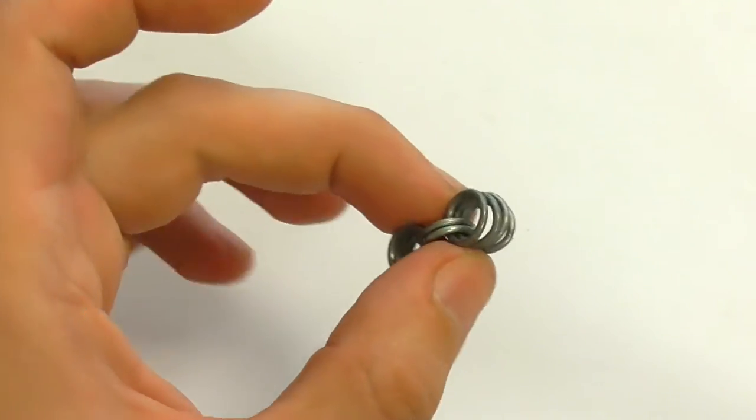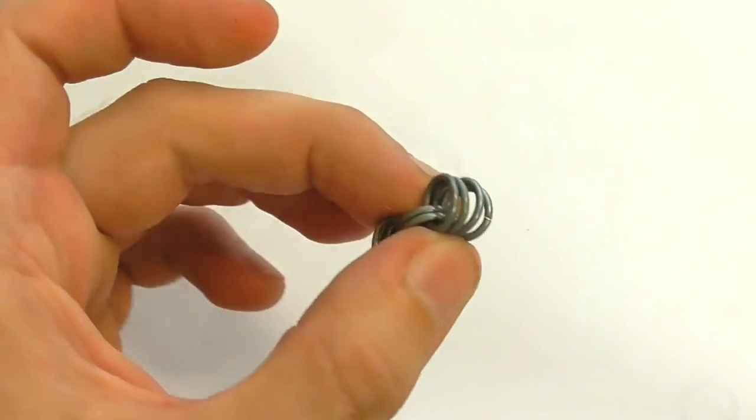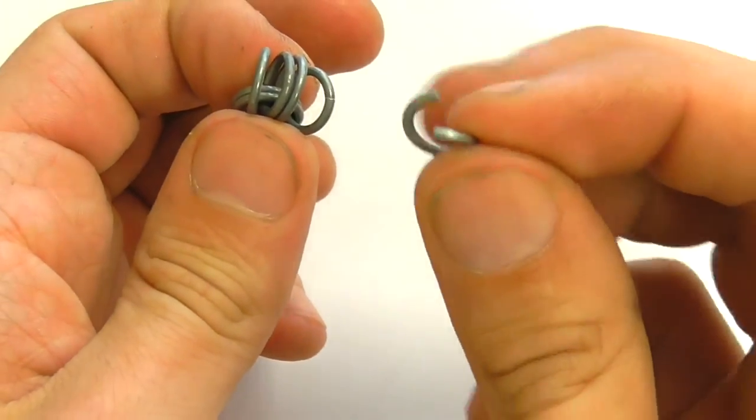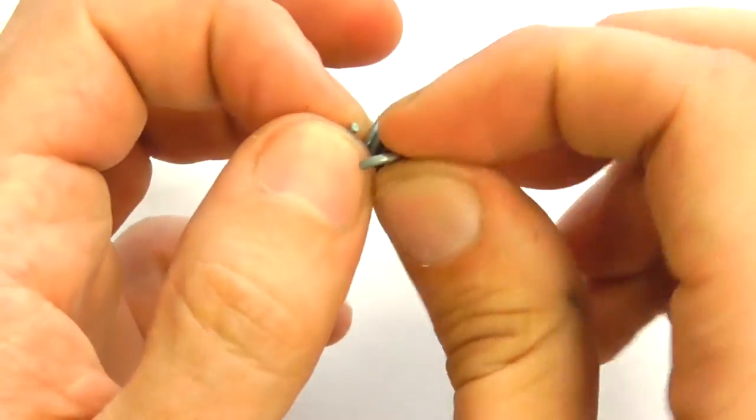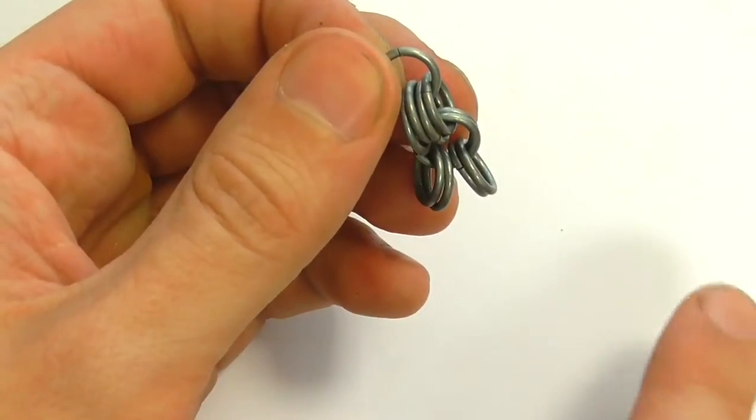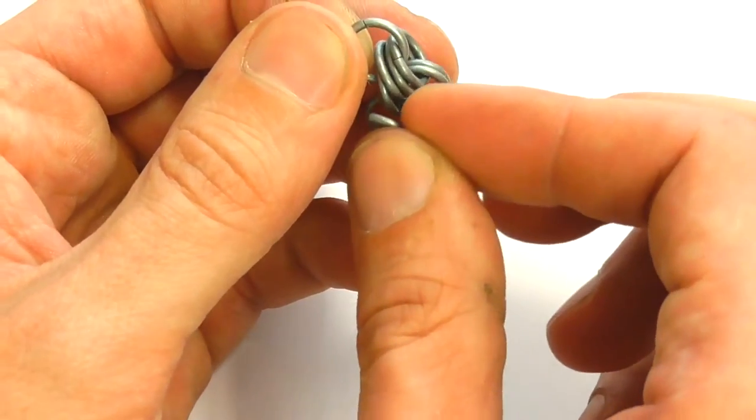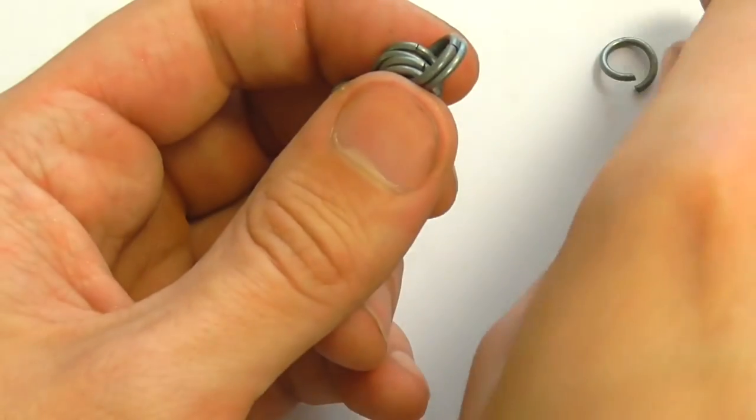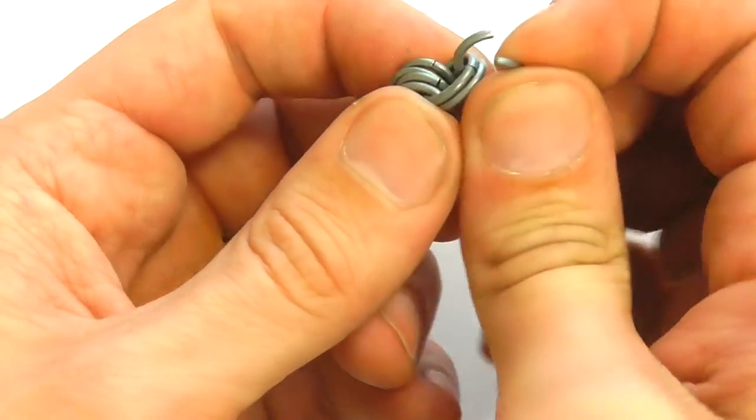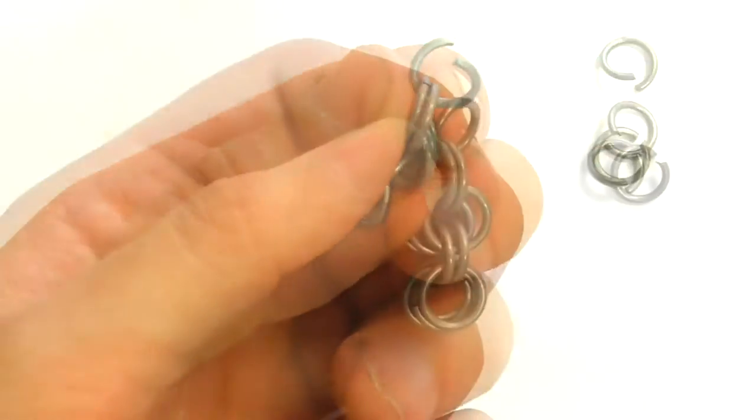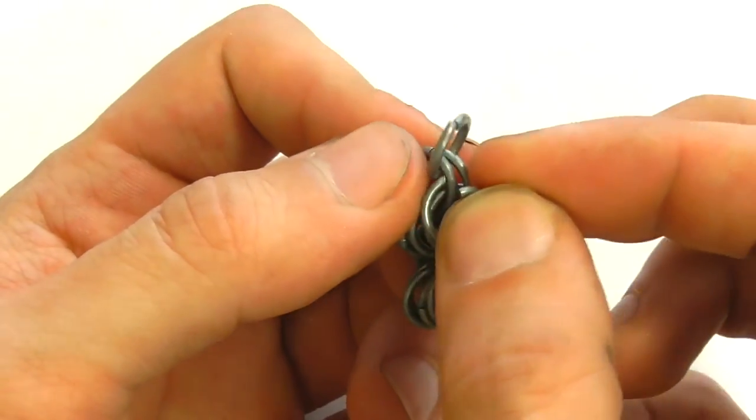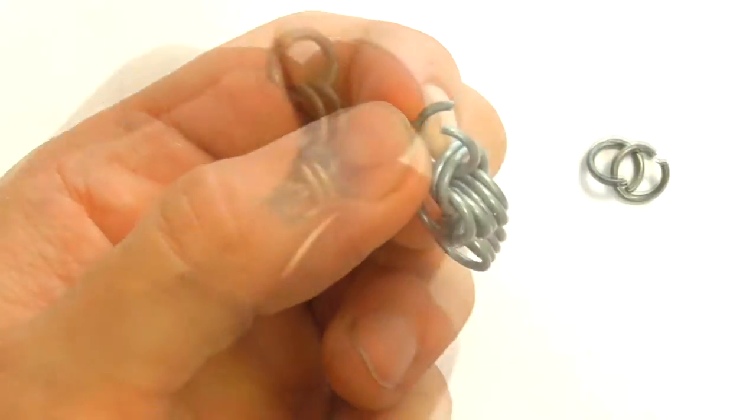Well, now let's make a small chain. Add the ring to the ring. Now let's take the ring and close it in, too.